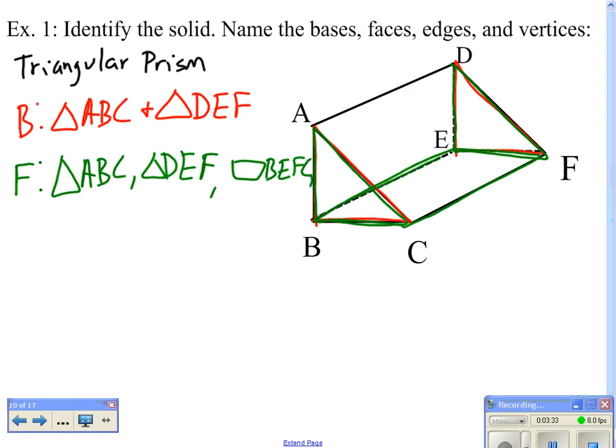We have the back rectangle, which we can label as rectangle ADEB. And then we have the slanted front rectangle on the front part of the prism, which we can label as rectangle ADFC.